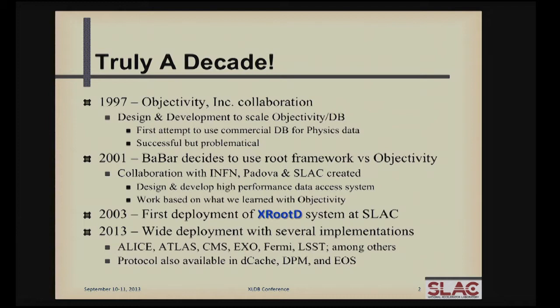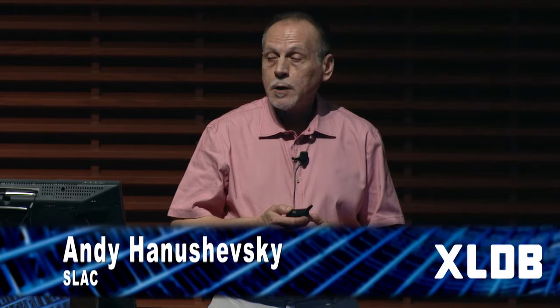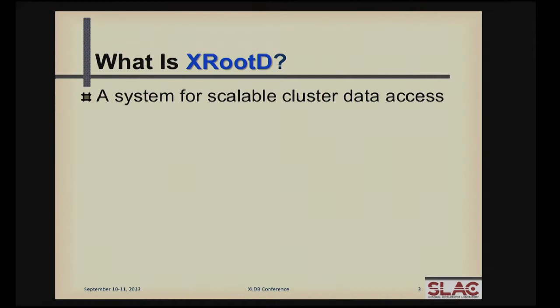We had a problem. We were looking at a large amount of data and didn't have a way to store it really effectively. So we started this project with INFN to develop a high-performance data access system, which got deployed in 2003. And 10 years later, quite a few people are using it in high-energy physics as well as astrophysics. So it's actually proven to be rather long-lived and rather popular.